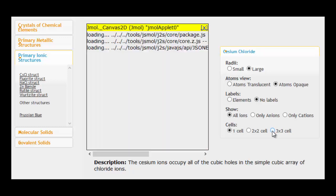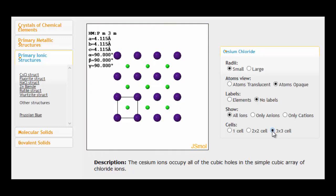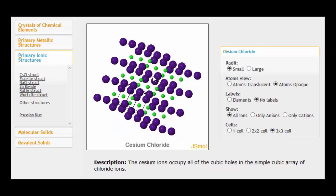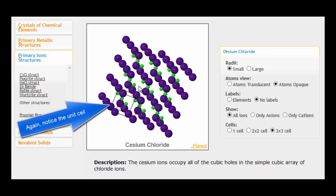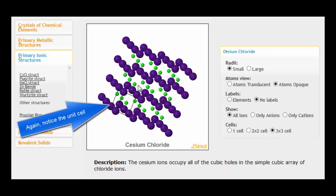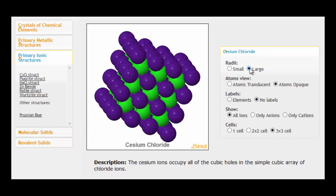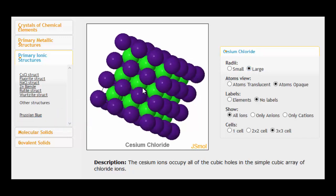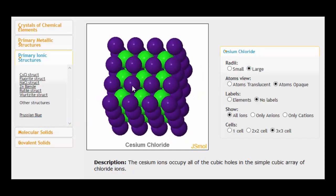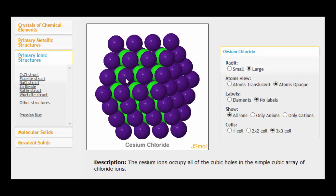And then we can redraw it again for three by three by three, which looks like this. Now, at the moment I've got the ions small. I can make them large, which gives you a better idea perhaps of how they pack together like that. And you can see that we can essentially keep adding on unit cells to this structure to make the caesium chloride crystal as big as we like. So the only thing that determines the size of the lattice is how many ions we've got available.